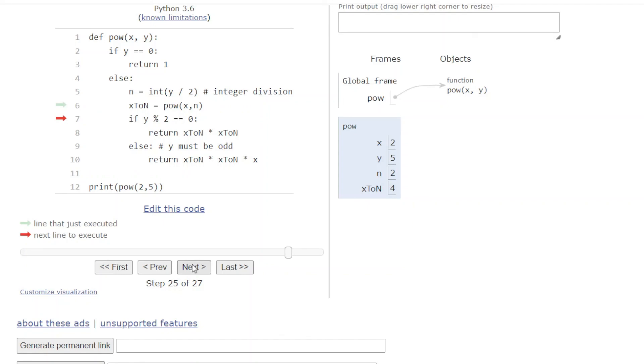And next, y is odd again, so we're going to be in the else case. We'll compute x_to_n times x_to_n times x. So that's 4 times 4 times 2. So 4 times 4 is 16 times 2 is 32, hence the return value of 32, which then gets returned to this call here and printed directly to the console output.